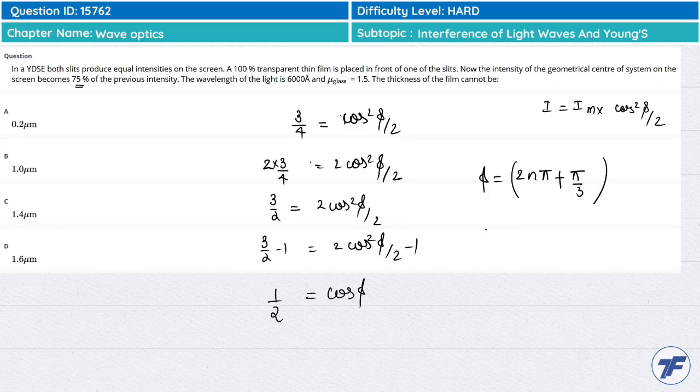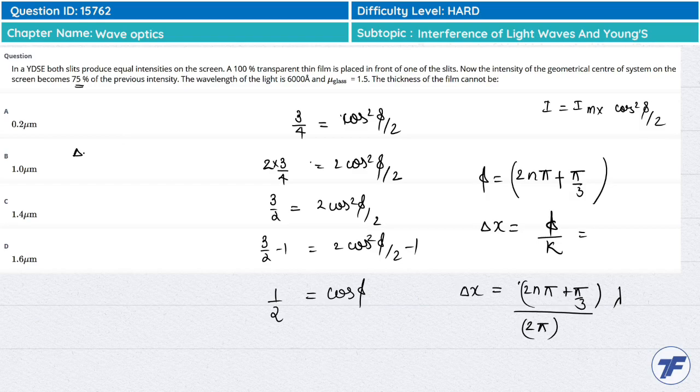Now this phase difference, our phase difference corresponds to path difference. The formula for phase difference is 2π/λ times Δx. So Δx will be, path difference conversion gives Δx = 2π/λ times path difference. Then Δx is equal to (2n + 1/3) into λ/2.